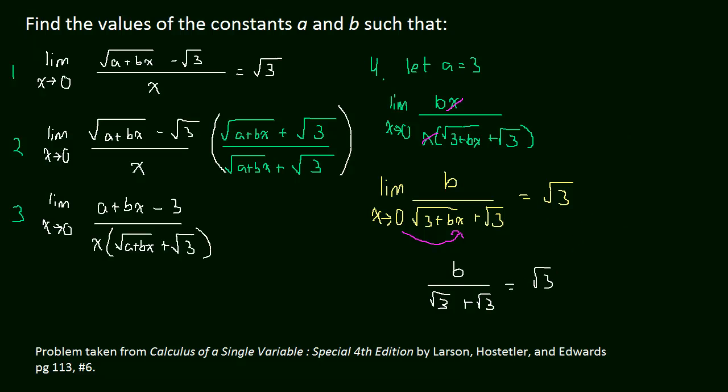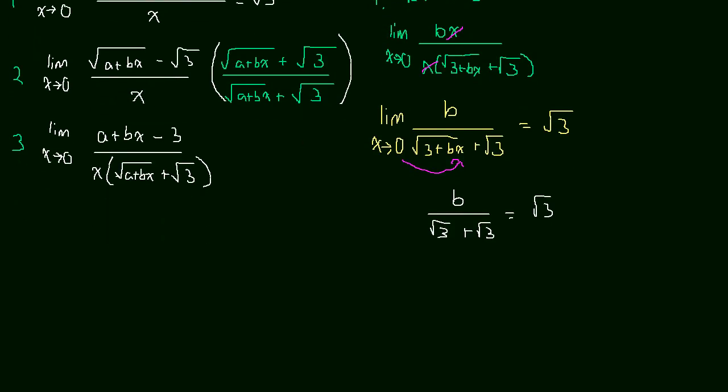And this is just, let me erase this to give myself more room. So this is just going to be B over 2 radical 3 is equal to radical 3. And now that's easy enough to solve. Just multiply by 2 radical 3 on both sides, and you're going to end up with B is equal to 6. The radical 3 times radical 3 will become just 3, and then you have that multiplying 2, so that's 6.